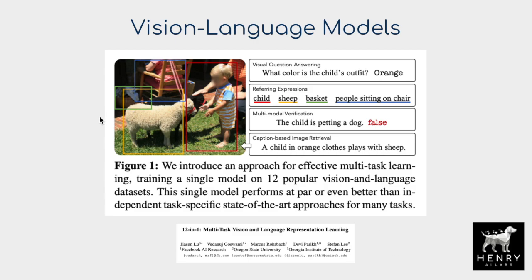Before diving into what's new about vulcanization, here are some examples of vision-language datasets that have been constructed. Common tasks include image captioning — where you take an image and write a caption like 'a child in orange clothes plays with sheep' — or visual question answering, such as 'what color is the child's outfit?', where the model answers in language given a visual input.